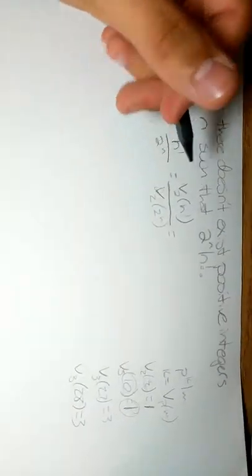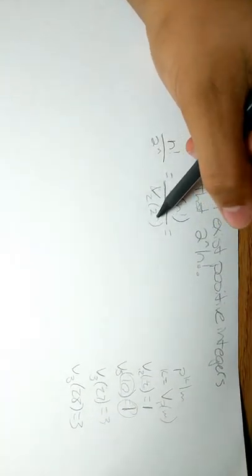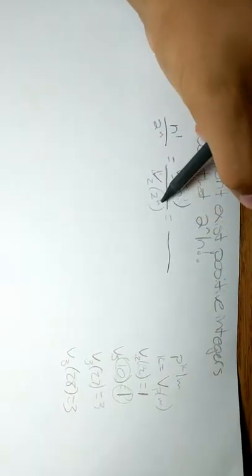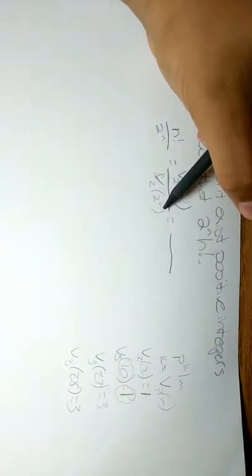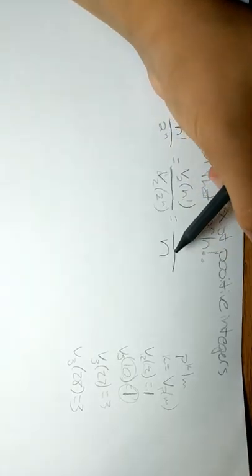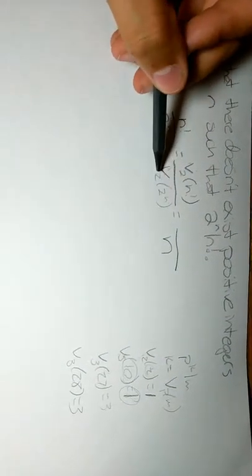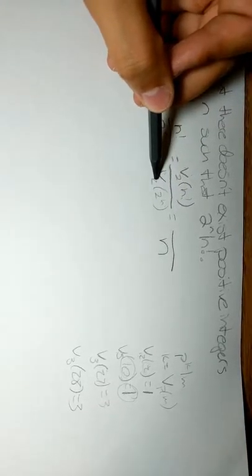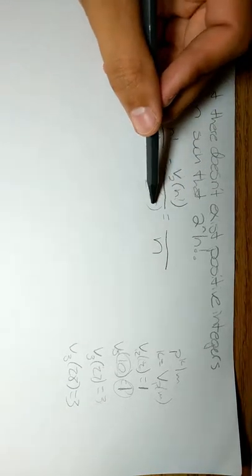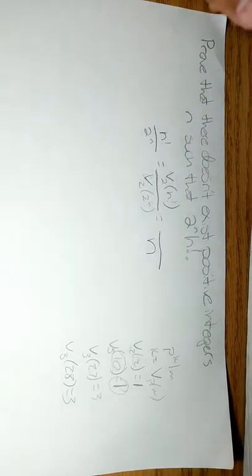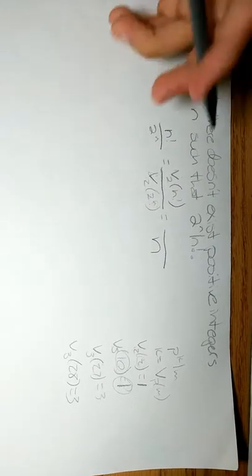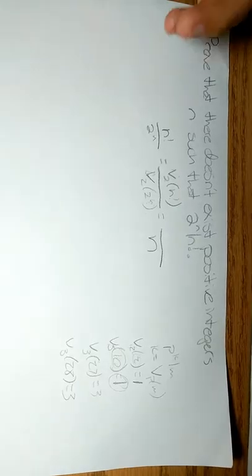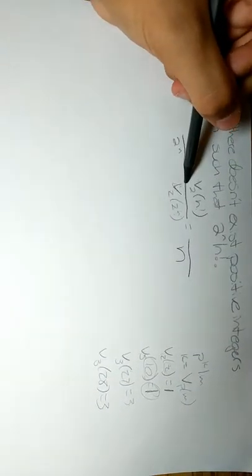Okay, now continuing on with the problem, you can just see it's very clear to show that v2 of 2 to the n is just going to be equal to n. For example, if n equals 3, it will be v2 of 8, and 2 to the third is equal to 8, which we said 3 is equal to n. So the answer, as you can see, is always just going to be n. That's very simple. Now we need to evaluate this.